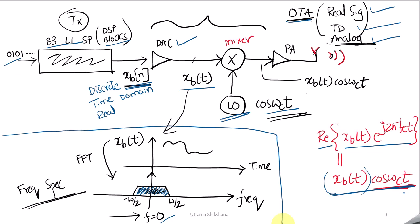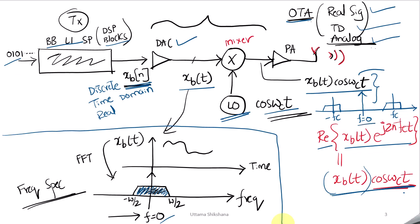Looking at the spectrum of xb(t)·cos(ωc t), we see components at +fc and −fc, symmetric around DC at f = 0. This confirms the signal is real — the spectrum is symmetric around the DC frequency. It is also analog and a time-domain signal. We can now pass it to the amplifier and transmit it over the air.